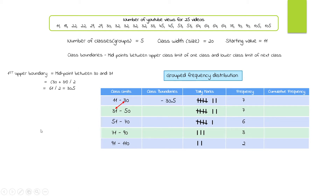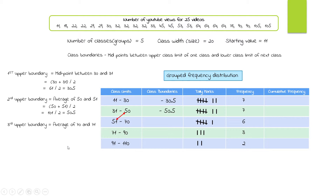The second upper boundary is the average of 50 and 51: (50 + 51) / 2 = 101 / 2 = 50.5. The third is (70 + 71) / 2 = 141 / 2 = 70.5. We can also notice that adding the class width of 20 to each boundary gives the next: 30.5 + 20 = 50.5, 50.5 + 20 = 70.5, and 70.5 + 20 = 90.5. Adding 20 once more gives the last upper class boundary: 110.5.